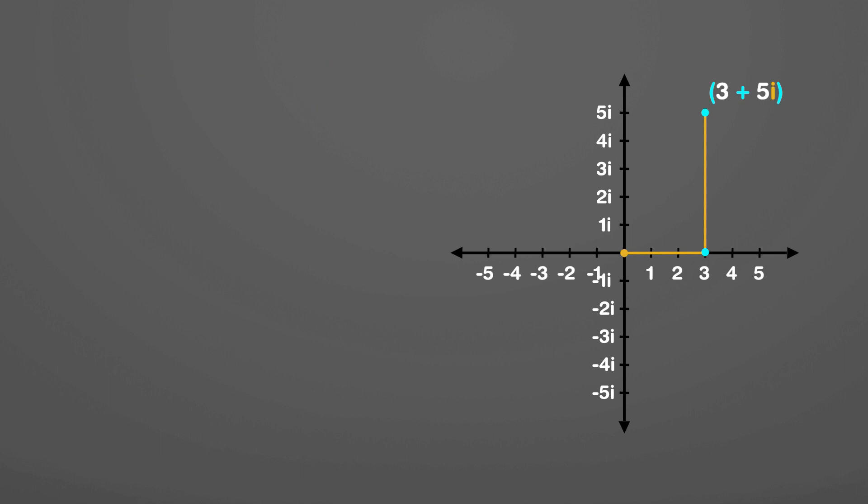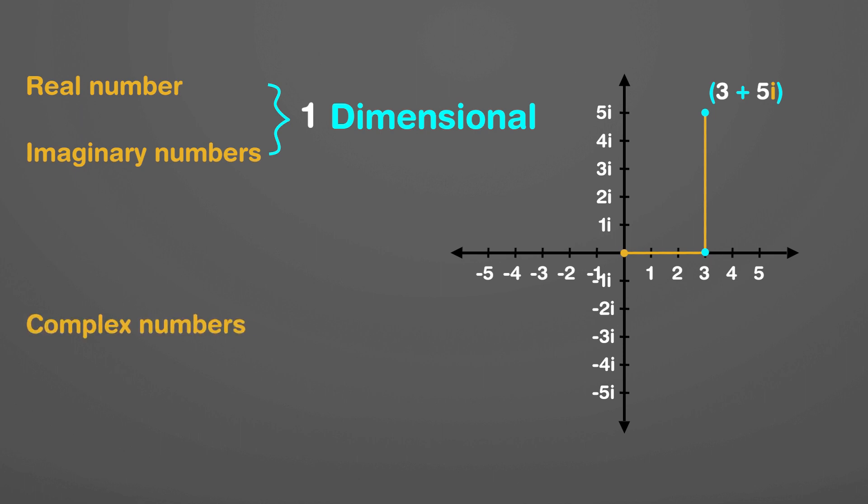Hence, we can say that real numbers and imaginary numbers are one-dimensional, whereas complex numbers, which are combinations of real and imaginary numbers, are two-dimensional, as we require a two-dimensional plane to track their position.